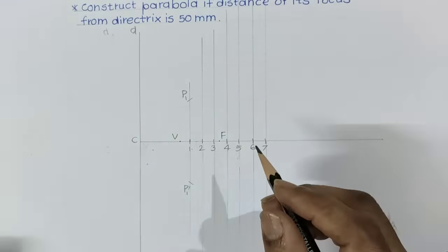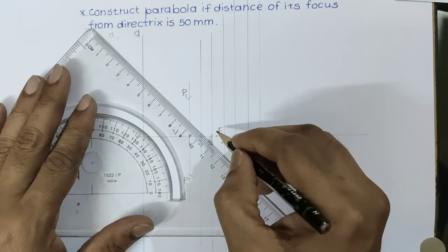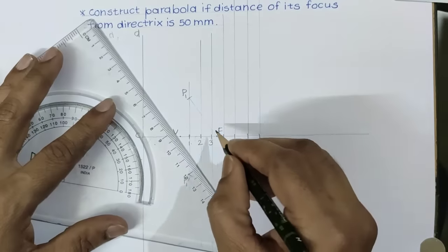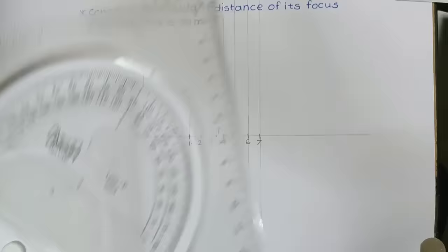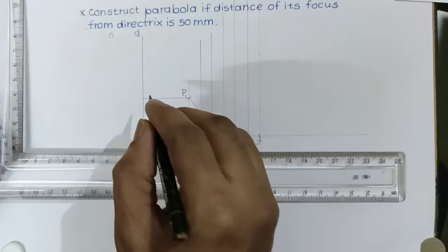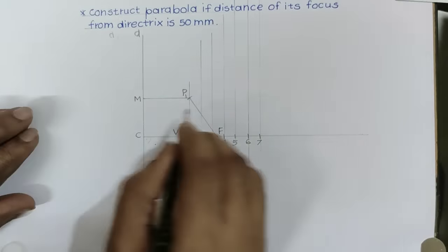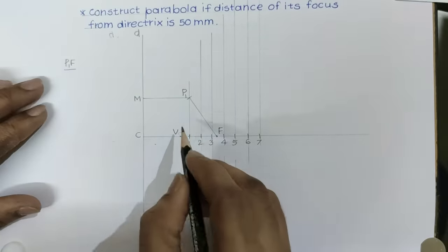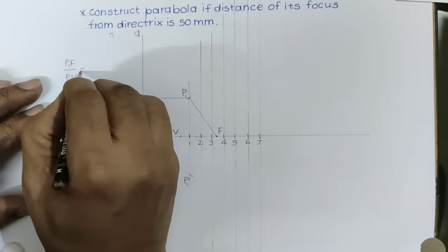Why these two points are lying on parabola? The reason is, if I join this point P1 with focus and if I drop a perpendicular from this point on directrix, let us call this point as M. Now, if you take this ratio, P1F upon P1M, it is how much?